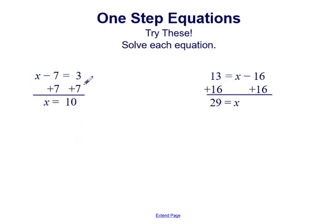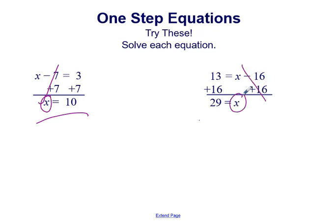Adding 7 to the left side undoes the subtracting 7 and gets the variable completely isolated. Adding 7 to the right side gives us 3 plus 7 equals 10, so our solution is x equals 10. In the second equation, adding 16 to the right side isolates variable x. Adding 16 to the left side gives us 13 plus 16 equals 29, making our solution 29 equals x.